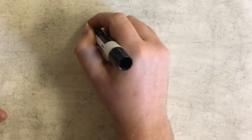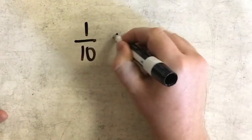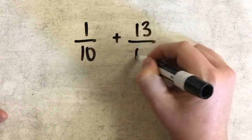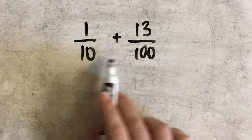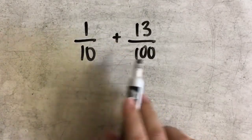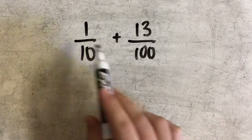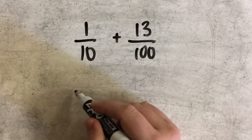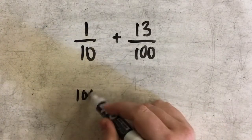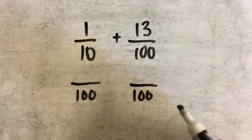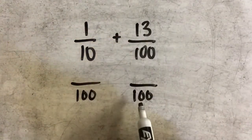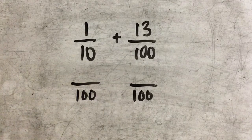Let's look at another example. Again, I cannot add since I have different denominators. So I'm going to change these denominators so that they are the same. The easiest way to do that is to change them both to the larger number, which is 100. So I'm going to change both of these fractions' denominators to 100.